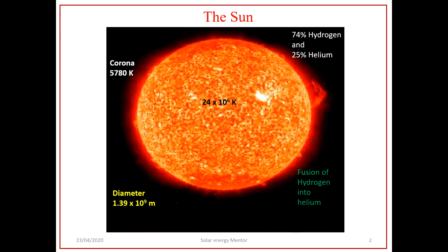The Sun is the closest star. It is a great sphere of hot gases and operates as a continuous fusion reactor. About 75% of the Sun's mass is hydrogen and 25% is helium, and the rest is made up of trace quantities of heavier elements. The average temperature at the center of the Sun is 24 × 10⁶ Kelvin. The outer surface of the Sun is called the corona, and its temperature is about 6000 Kelvin.